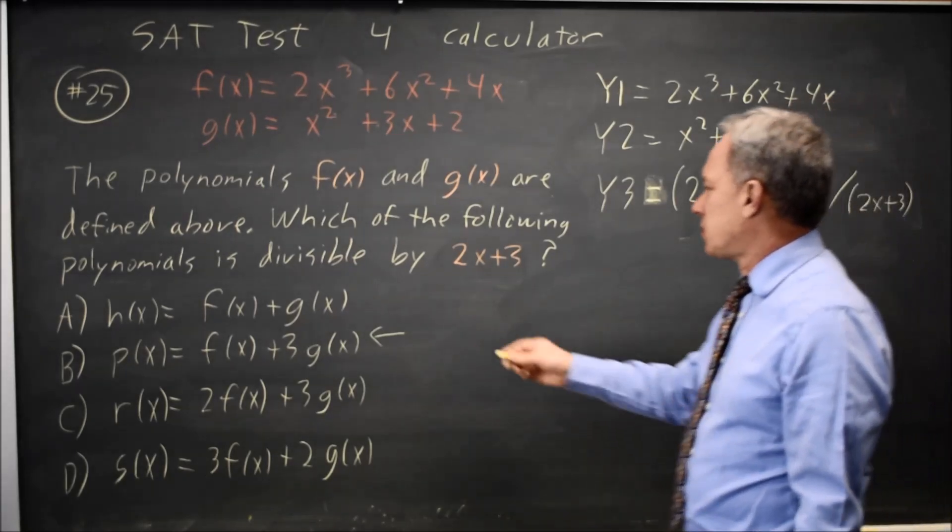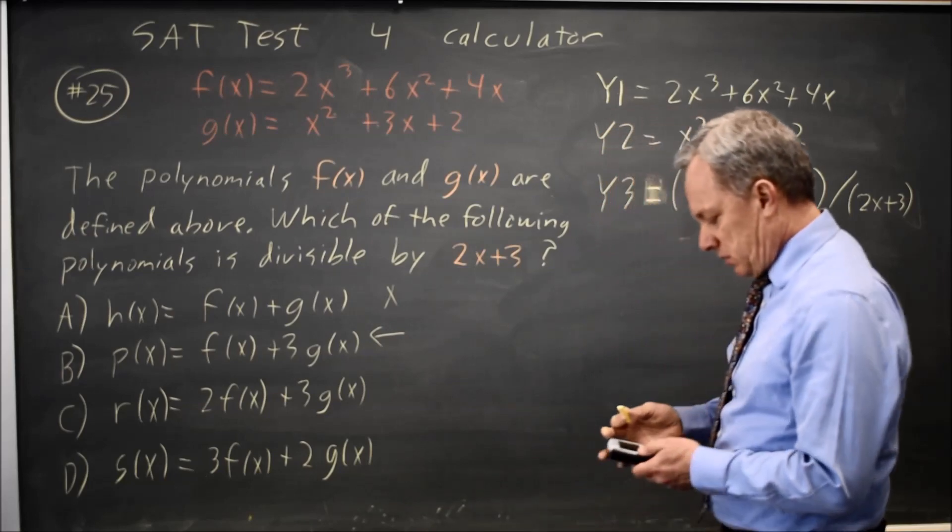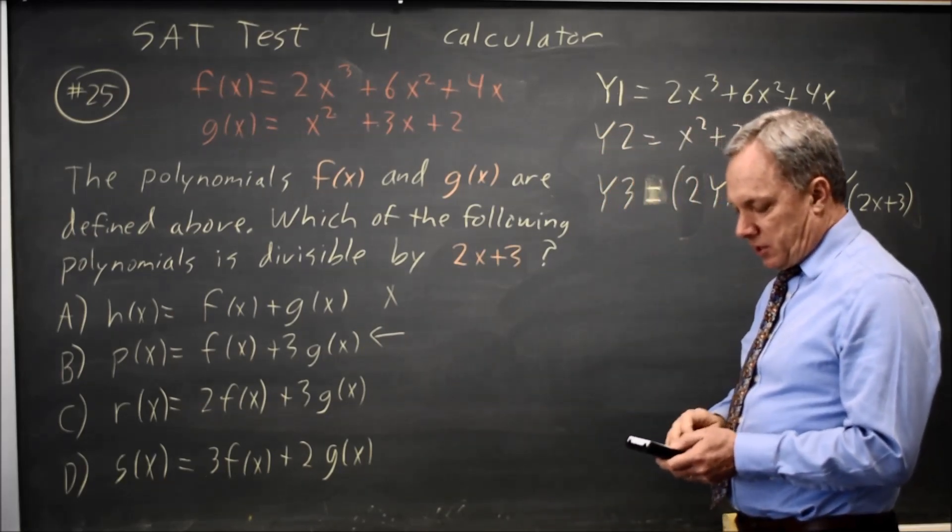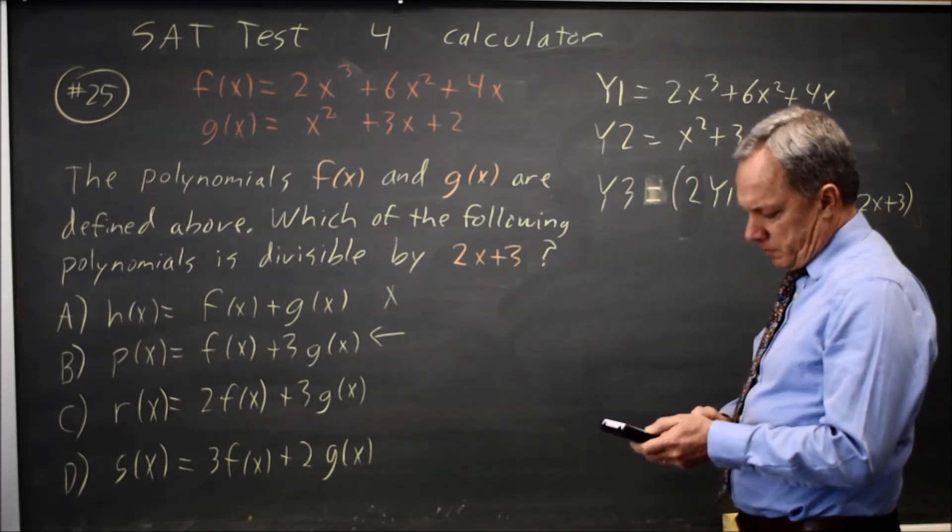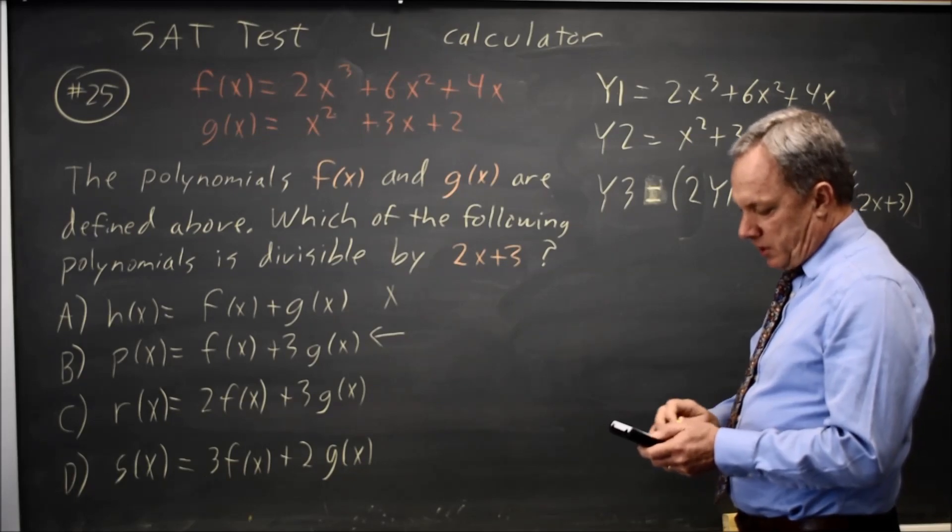And that would be choice C. I already saw choice A doesn't work. So if I type the 2 and the 3 and hit graph,